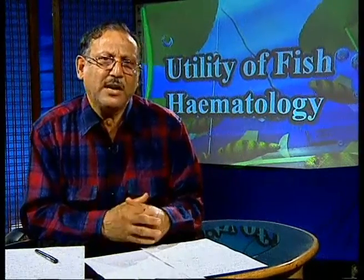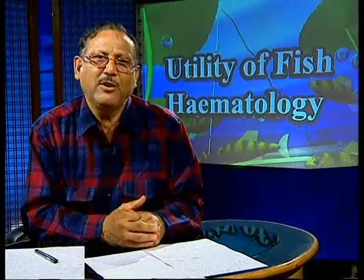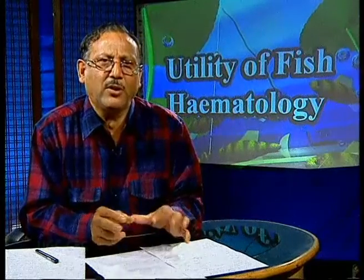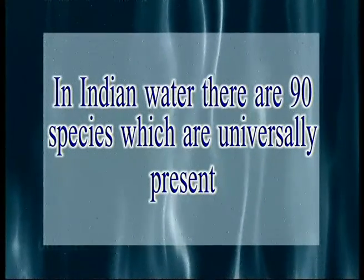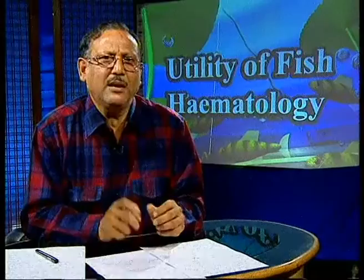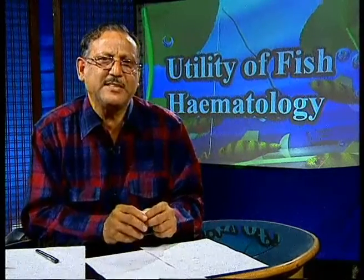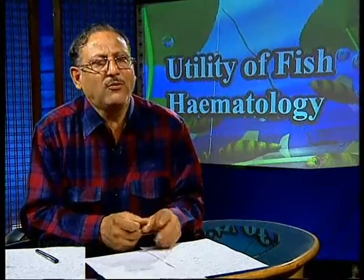To make use of fish hematology for diagnostic purposes, we must first have knowledge of all basic hematological components for every species of fish. There are as many as 21,000 species of fish in the oceans and freshwater systems of the world. In Indian inland waters alone, there are about 90 universally present species, among which about 20 are commercially important and about 10 are used for pond, lake, or inland fish culture.